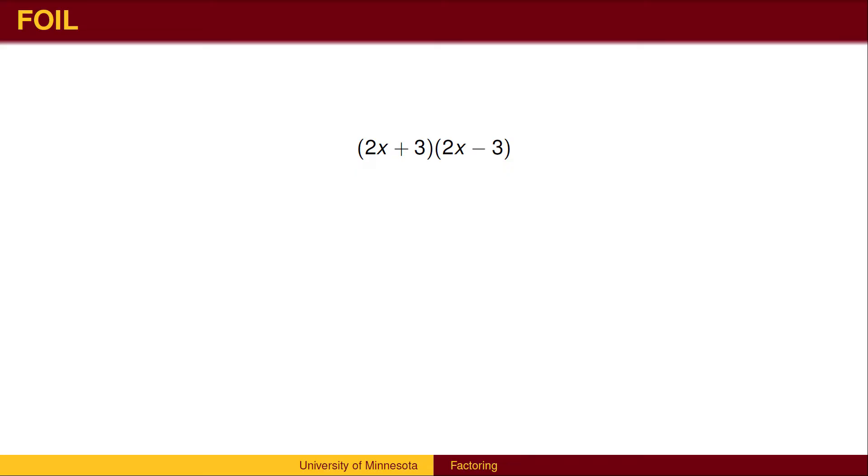Here is one more example of the FOIL method, in this case, in the special difference of squares pattern. We multiply the first terms, then the outside, then the inside, and the last. Notice that the inside and outside terms cancel, leaving us just with the first and last terms.